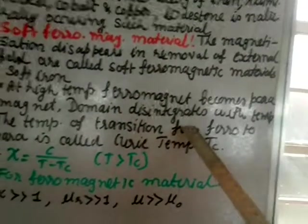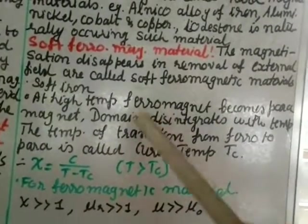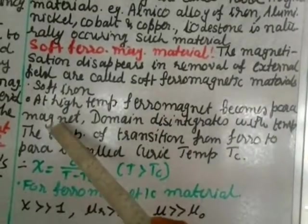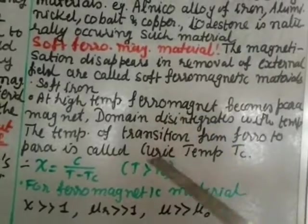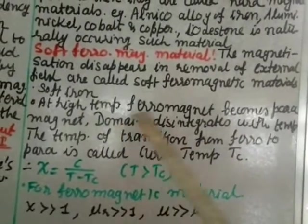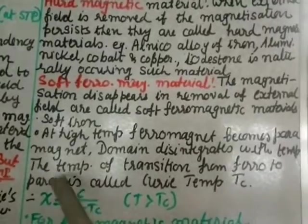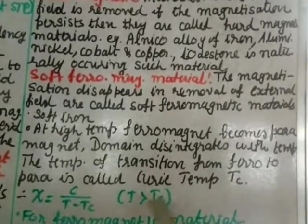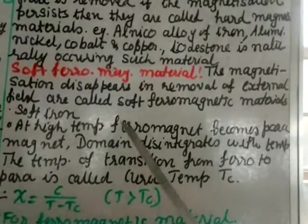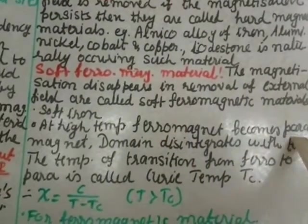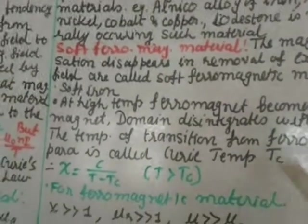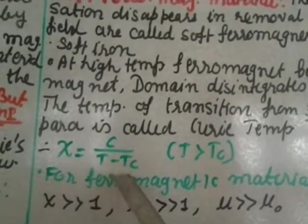At high temperatures, a ferromagnet becomes a paramagnet. Ferromagnetic materials depend on temperature; with a change in temperature the domain orientation gets disorientated — domains disintegrate with temperature. The temperature of transition from ferro to para is called the Curie temperature. The symbol used is Tc, and the relation is χ = C / (T − Tc), where Tc is the Curie temperature.